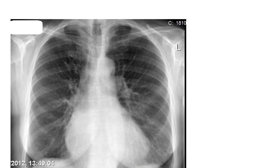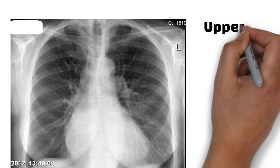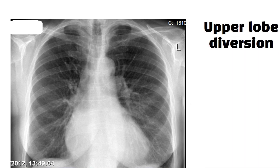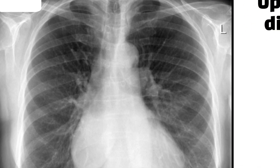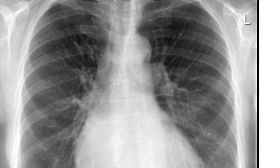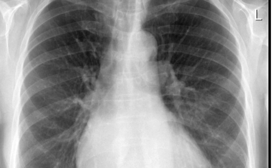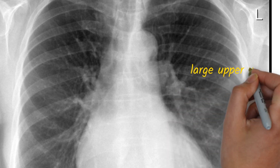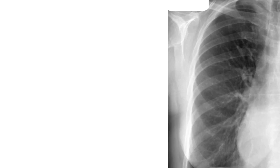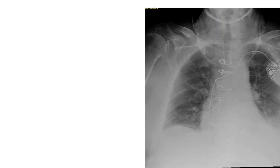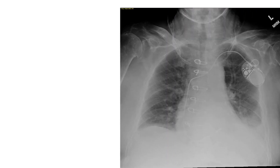D is for diversion, or upper vessel enlargement. Normally the upper zone vessels are smaller than the lower zone vessels, so if the upper vessels become the same size or larger, that means there's increased pulmonary venous pressure.